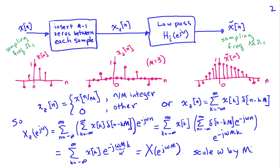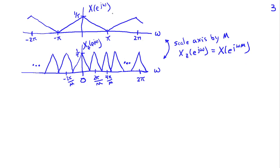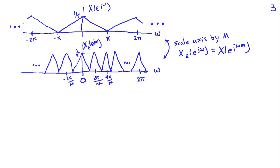We can sketch this to verify that it works. Starting with the original signal at the lower sampling rate, when we scale the frequency axis by m, the spectral replicas become compressed and get closer together. What was at 2π now appears at 2π/m, what was at 4π appears at 4π/m, and so on. Since the DTFT is always 2π-periodic, x_z looks like the sketch shown.